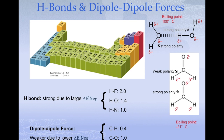This difference in force strength has a dramatic effect on boiling points. Water has a boiling point of 100°C — quite high for a small molecule — because of its very strong hydrogen bond interactions. Formaldehyde, by contrast, has a much lower boiling point of −21°C because its dipole-dipole forces are far weaker.